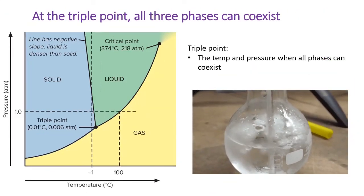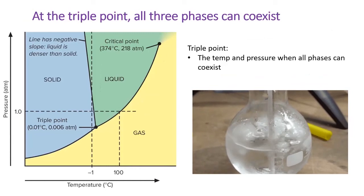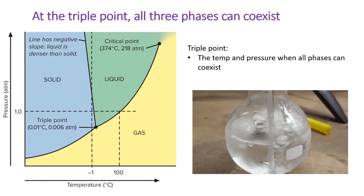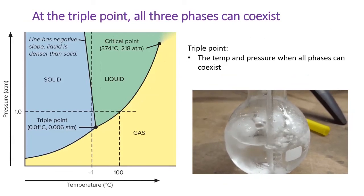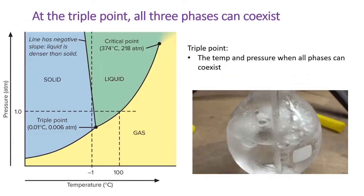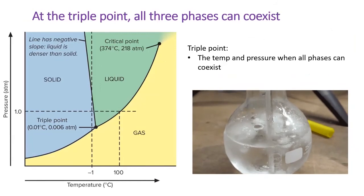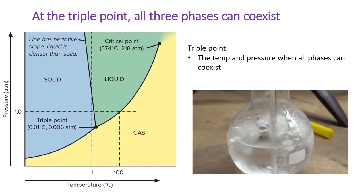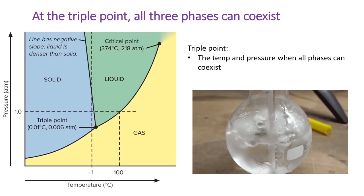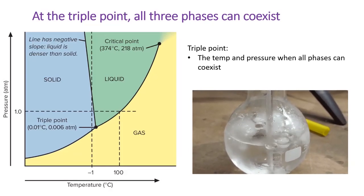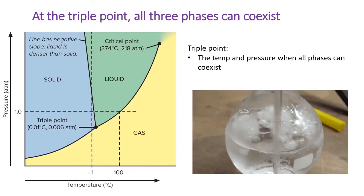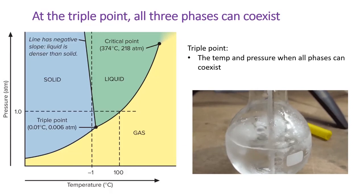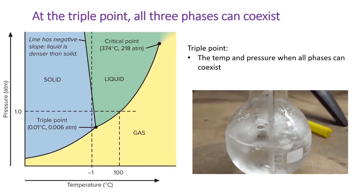Every substance has two unique points on its phase diagram. The first is the triple point, which appears at the intersection of the solid, liquid, and gas phases. At the triple point, all three phases can coexist. For water, this occurs at 0.006 atmospheres and 0.01 degrees Celsius. This beaker has those exact conditions, allowing ice water to boil. Pretty incredible.